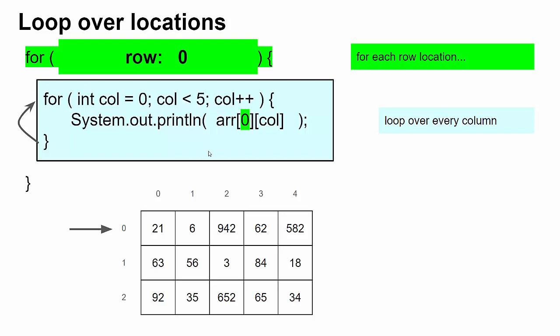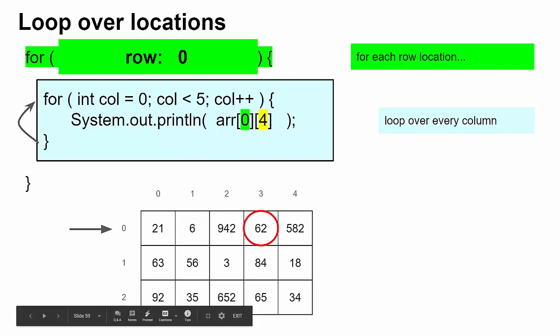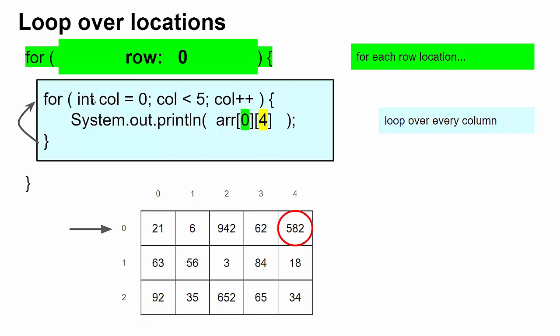Column starts at zero, and then goes to one, and then two, and then three, and then four. Wow, a lot of errors in these slides. Okay, three, four. And now that we're at the end of the column loop, this for loop is done. So we hit the closing brace for this row loop, and row adds by one.